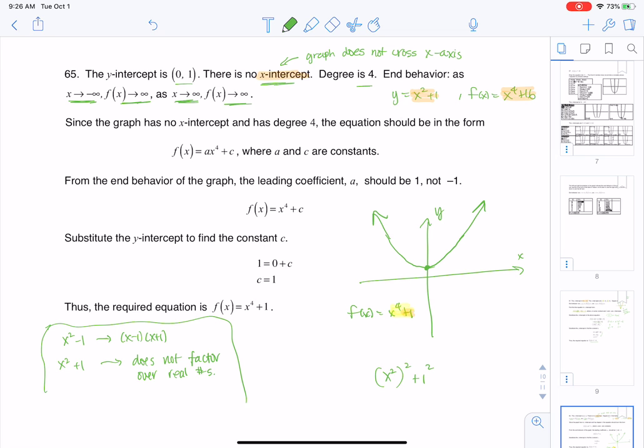The end behavior will be both ends up. But I went into it more formally here. Since the graph has no x-intercepts and degree 4, this is going to be the format of my function: f(x) = ax⁴ + c. I was also told that this a value had to be either 1 or -1. The reason I'm going to opt for a being positive 1 is because they told us the end behavior had both ends up. So when both ends are up, it's got to be a positive lead coefficient.